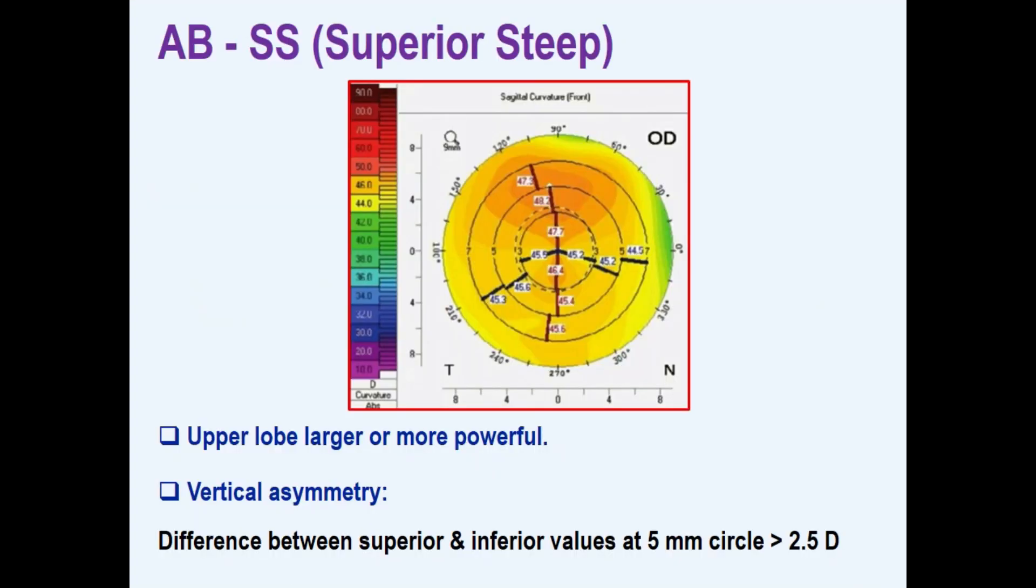Asymmetric bowtie superior steep. In this pattern, the superior loop of the bowtie is larger and more powerful than the inferior loop. If the difference between the average superior and average inferior values at the middle ring is greater than 2.5 diopters, it is abnormal.